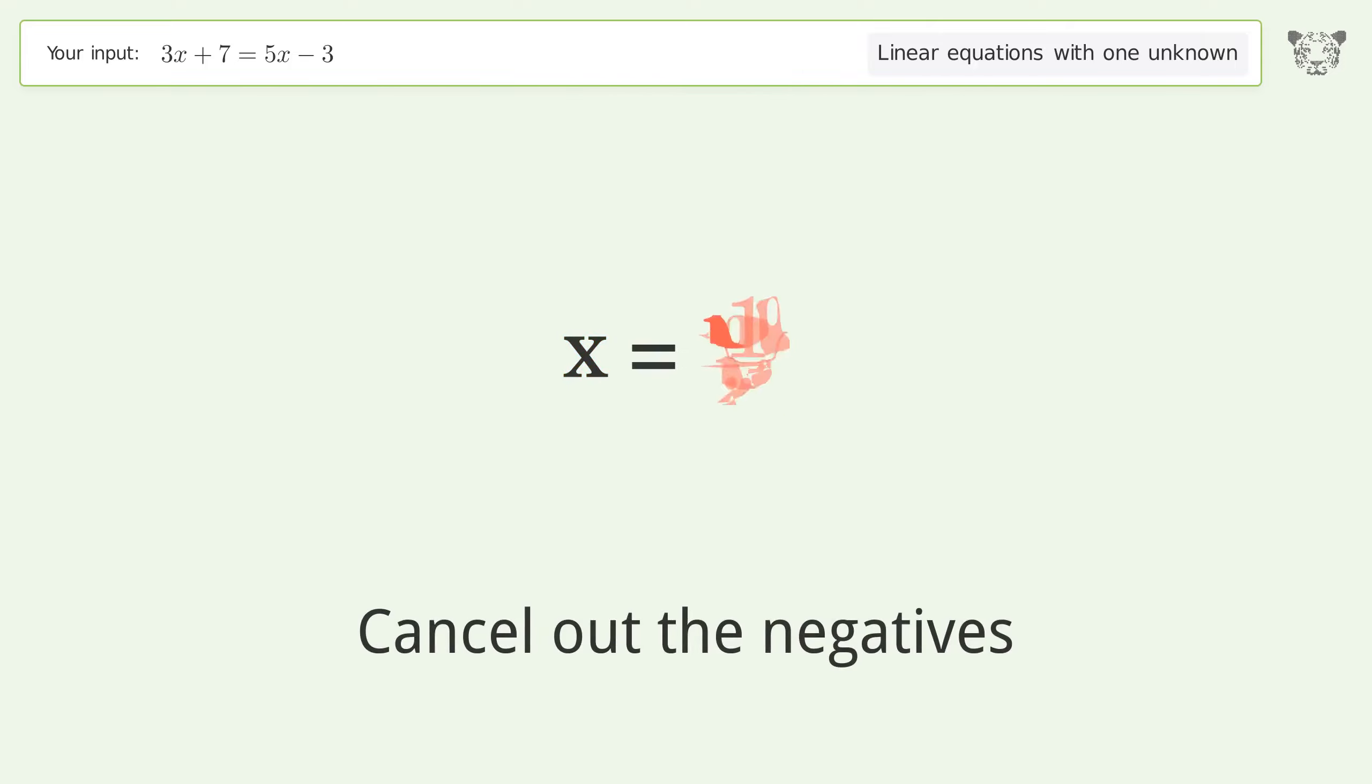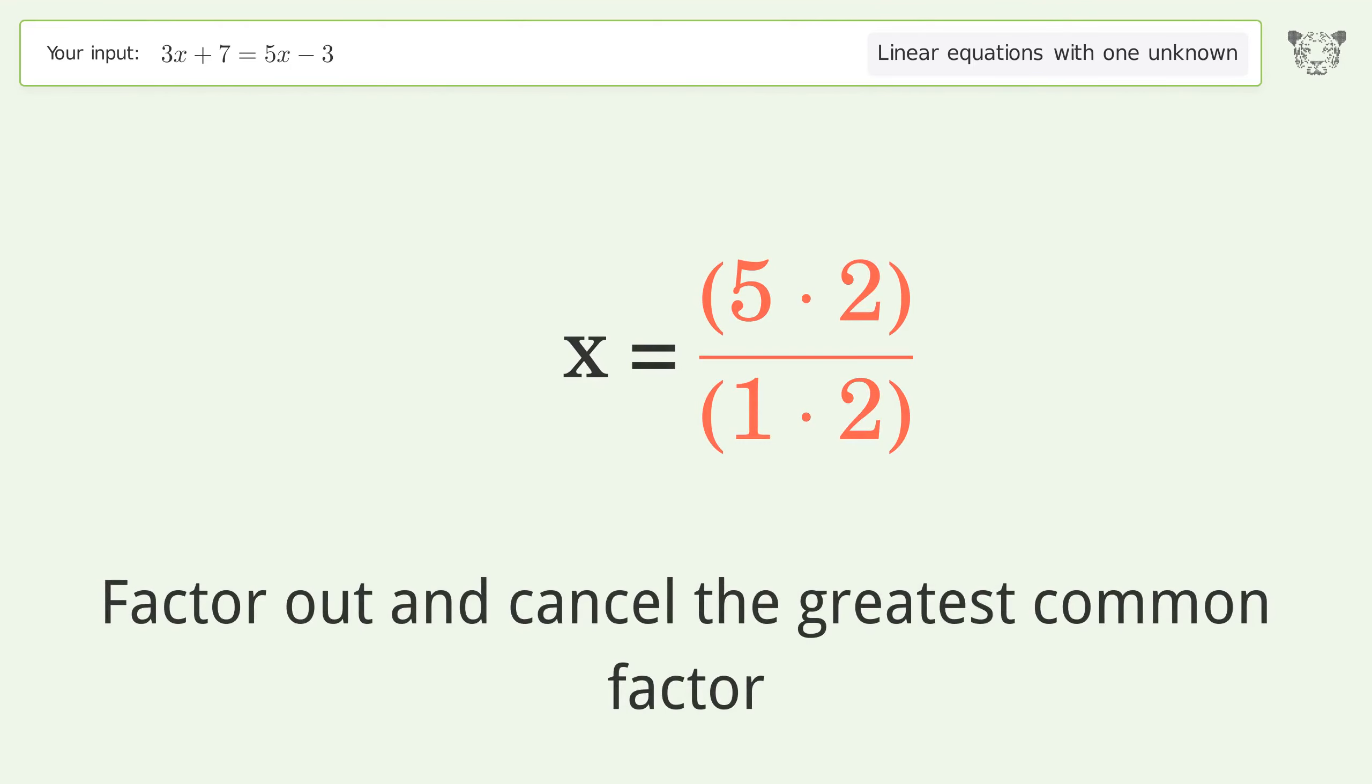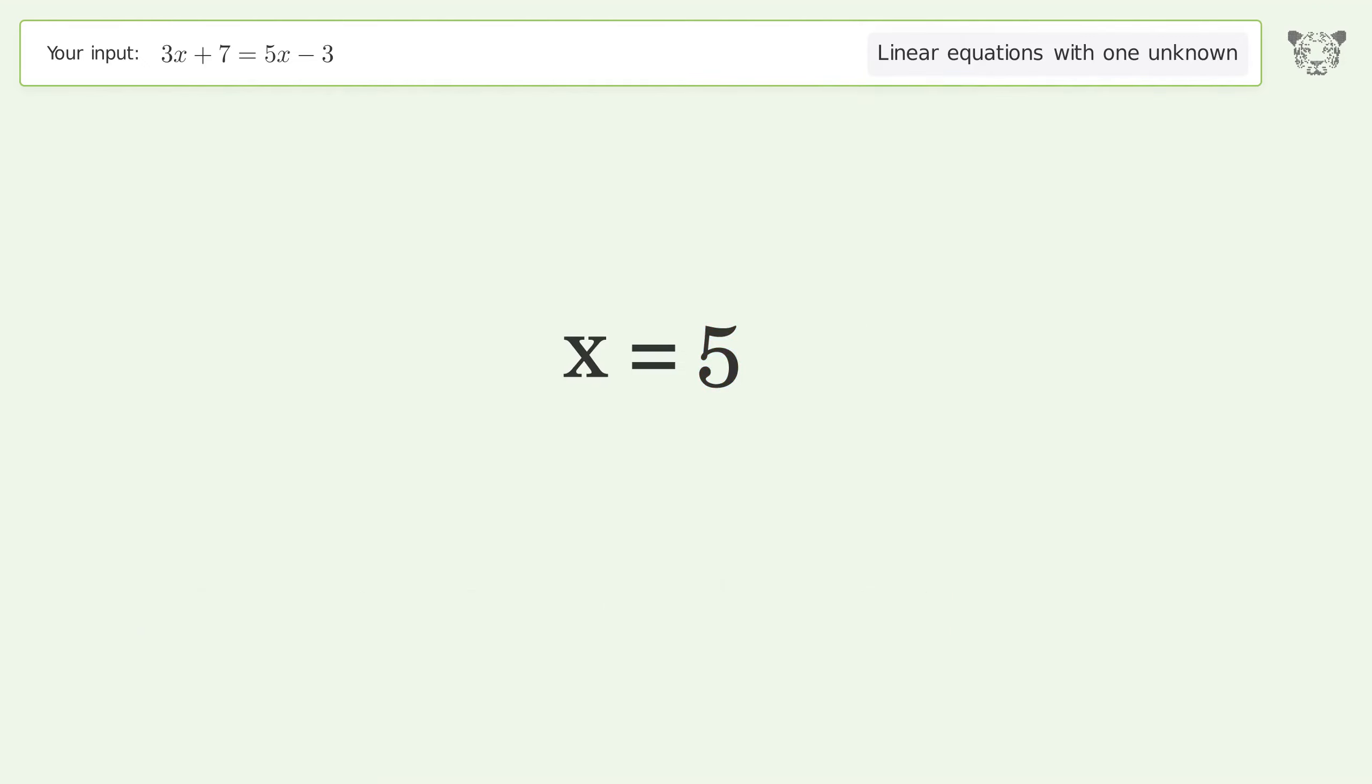Find the greatest common factor of the numerator and denominator. Factor out and cancel the greatest common factor. And so the final result is x equals 5.